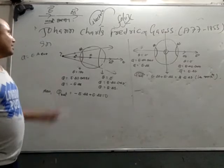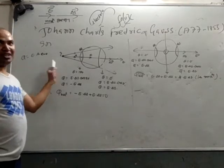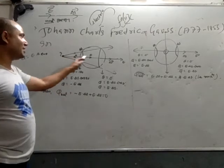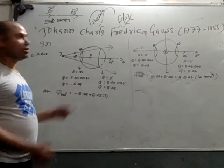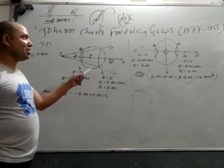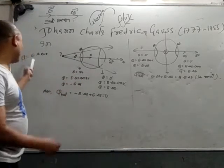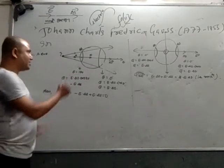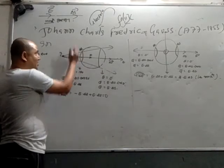He first realized that if the charged particle is kept outside the surface, the number of field lines entering is equal to the number of field lines exiting. So the total flux will be zero. If we use the mathematical formula of flux equal to E·S·cos θ, let us see the two cases.